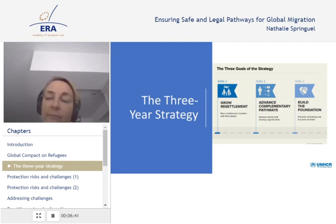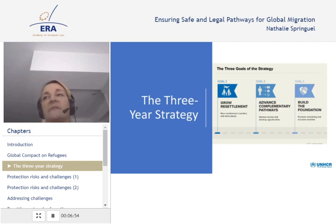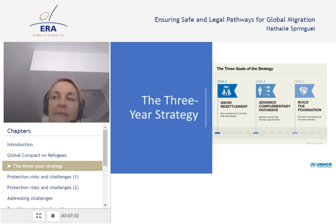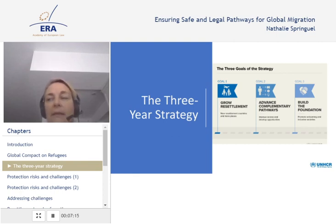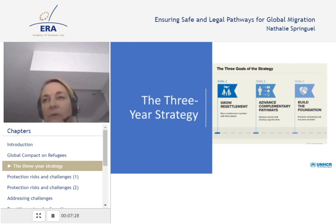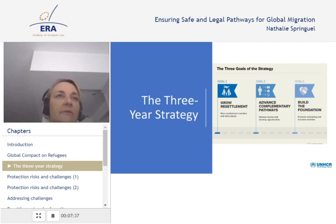The strategy has three goals. The first goal is to grow resettlement — increasing it in terms of places, scope, size, and quality. The second objective is to advance complementary pathways, to improve access and develop opportunities. While resettlement is an important and preferred tool to respond to vulnerable refugees, complementary pathways can also expand third-country solutions and ease pressure on host countries. The third objective is to build the foundation, promoting solidarity, diversity, and openness — all elements essential for resettlement and complementary pathways to grow.